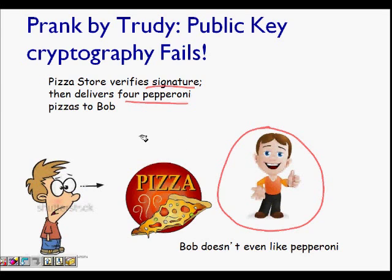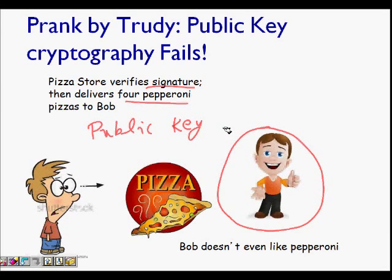Bob suddenly sees this prank — he hasn't ordered anything. The delivery man says he did authenticate using a public key. So has public key cryptography failed? The store did verify that it was signed by a private key and decrypted by the public key — so where is it going wrong, and how can we solve this problem?